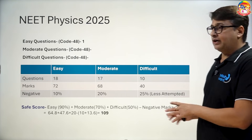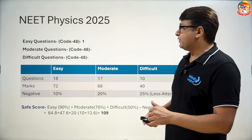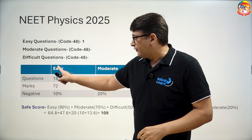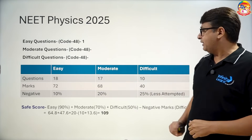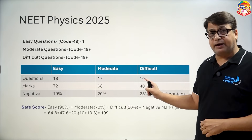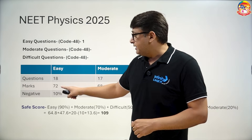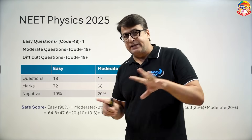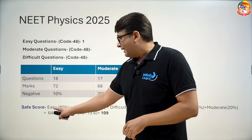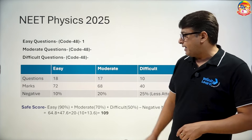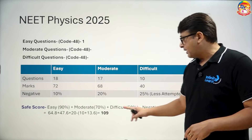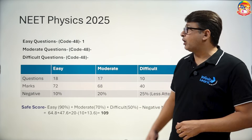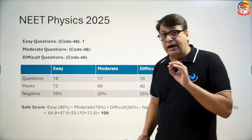Now comes physics, which is the difficult part. Everyone says physics is difficult. We have not mentioned the question numbers, but easy questions are 18, moderate are 70, and difficult are 10. The marks are 72, 68, and 40. The formula remains the same as in chemistry — easy comes to 64.8. When you calculate total positive marks and subtract negative marking, it comes to 109. So the safe marks for NEET physics is 109 marks.